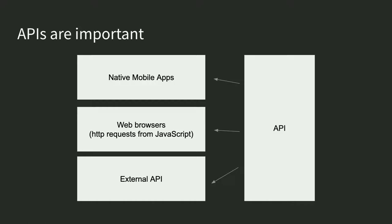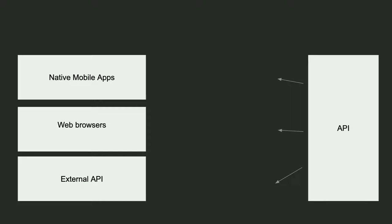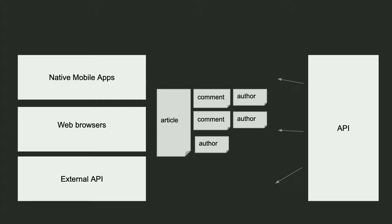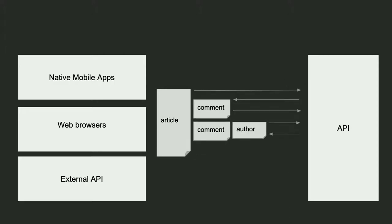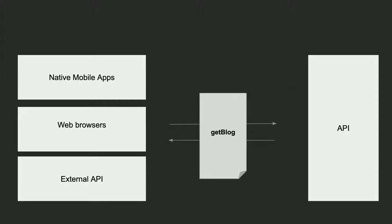APIs are important. We all probably have some kind of API in our application. Oftentimes these talk to our native mobile apps, web browsers, or other APIs. They come in all different shapes. Maybe you have a blog with an API that gives you articles, comments, and authors. You might build this API in different shapes depending on your needs — making requests for every single resource like a RESTful API, or creating one endpoint that gives back all the data you need for a particular application.